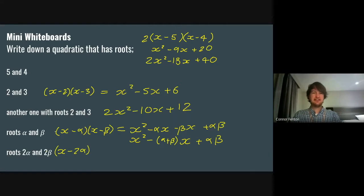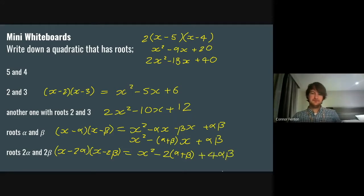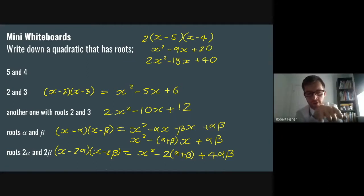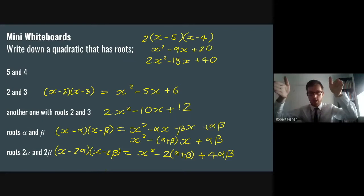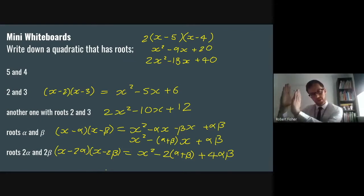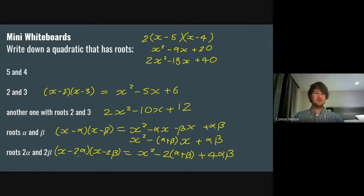For the last one — with roots 2α and 2β — it's going to be exactly the same as before but rather than minus alpha, it's going to be minus 2α and x minus 2β. So we get x² − 2(α + β)x + 4αβ. You've doubled the roots from the one above. So on the axes, the two roots where it crosses the x-axis are going to be twice as far apart — essentially what we've done by doubling all the roots is a transformation.